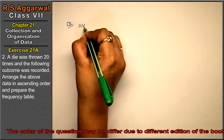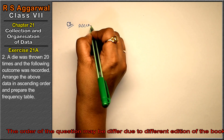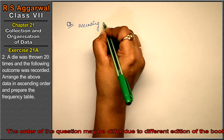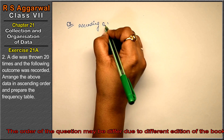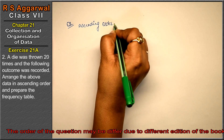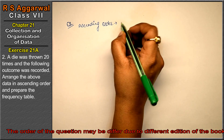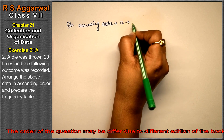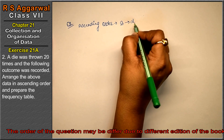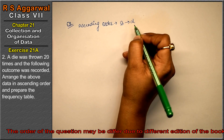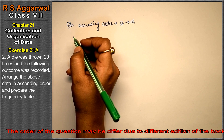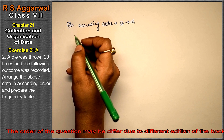Ascending order means from smallest to largest — छोटे से बड़ा. So we arrange from the smallest number first. Now we will count each outcome from the recorded data.